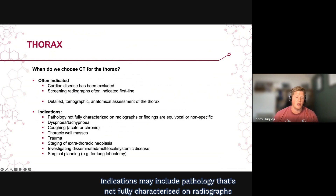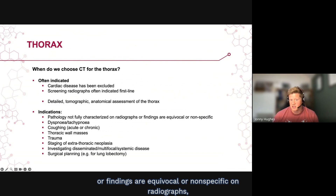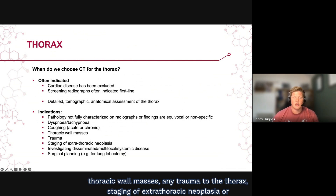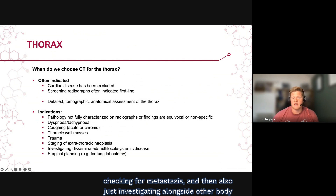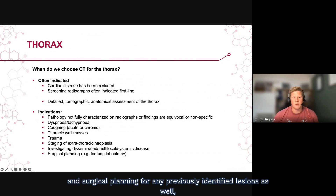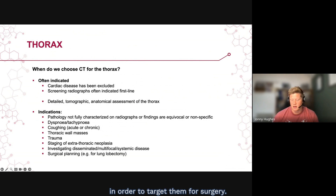Indications for thoracic CT may include pathology not fully characterized on radiographs, or findings that are equivocal or nonspecific on radiographs; any dyspnea or tachypnea; coughing, whether acute or chronic; thoracic wall masses; any trauma to the thorax; staging of extra-thoracic neoplasia or checking for metastases; investigating alongside other body regions for disseminated multifocal systemic disease; and surgical planning for any previously identified lesions.